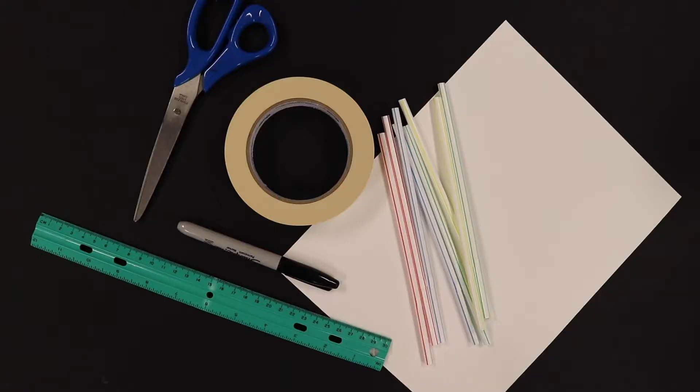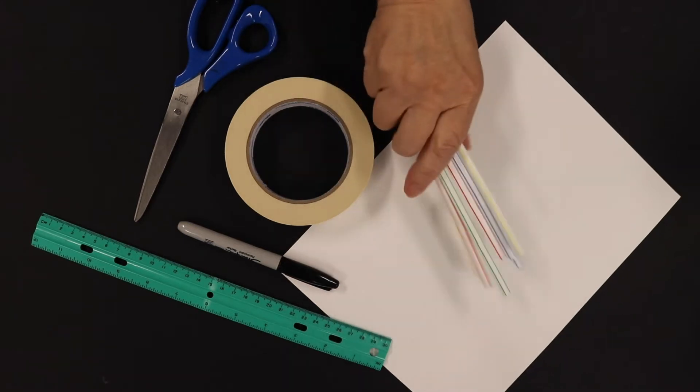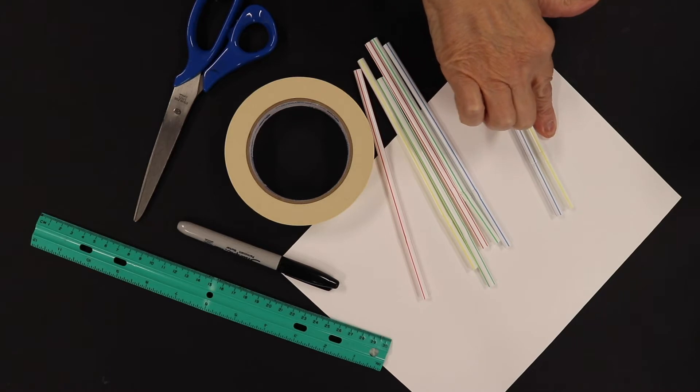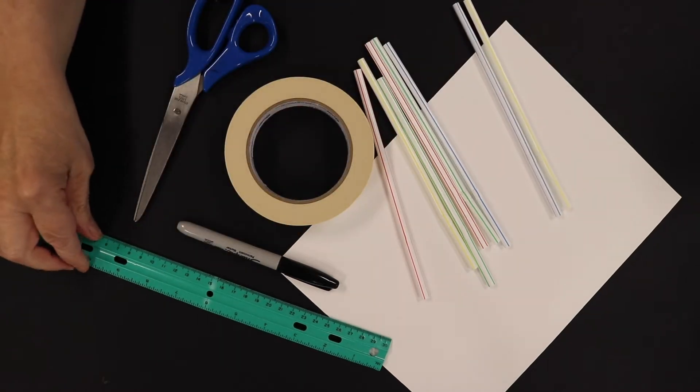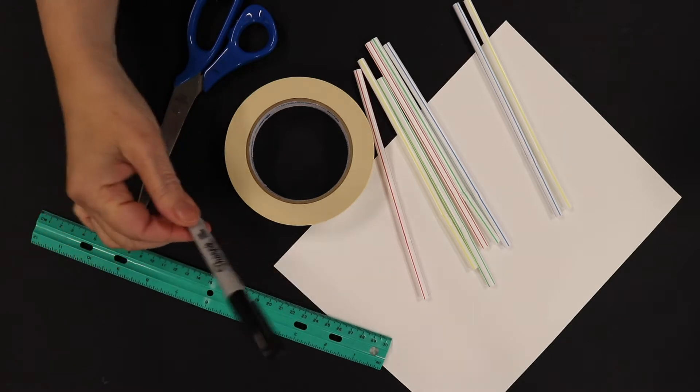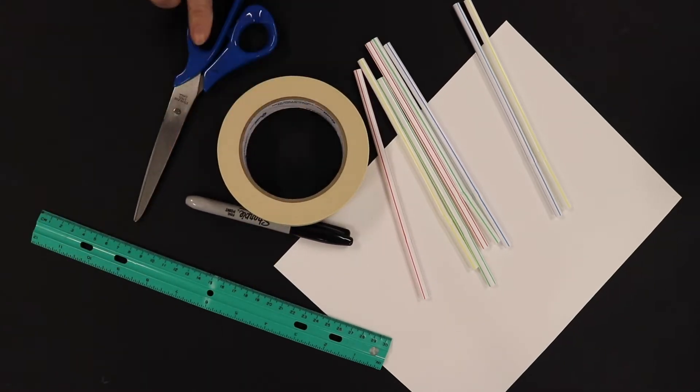The materials needed for musical straws are eight straws, a piece of eight and a half by eleven white piece of paper, a ruler with both inches and centimeters, a pen, masking tape, and a pair of scissors.